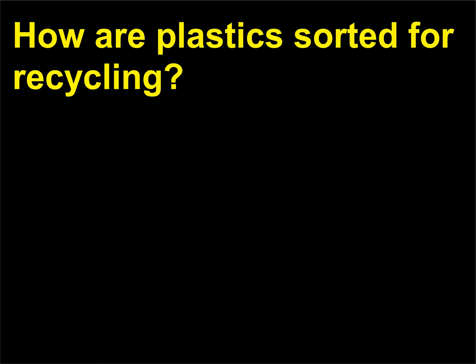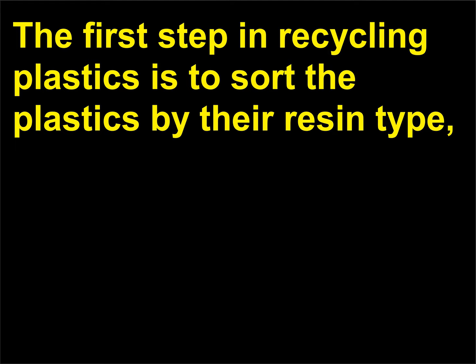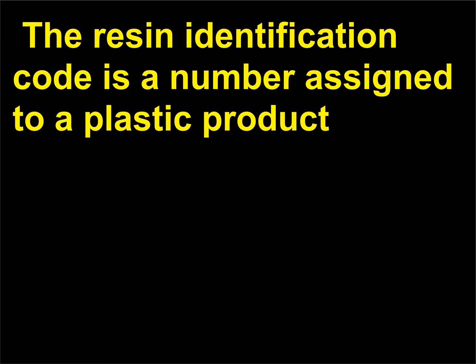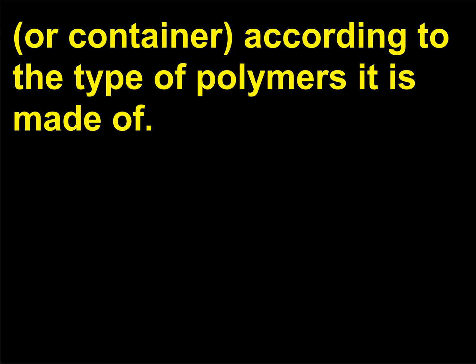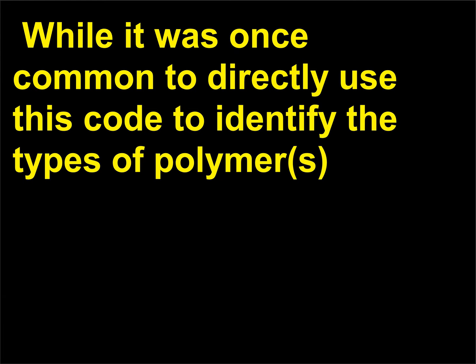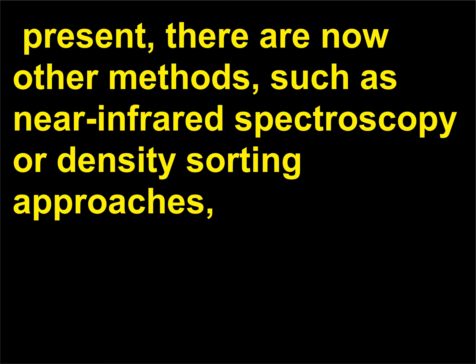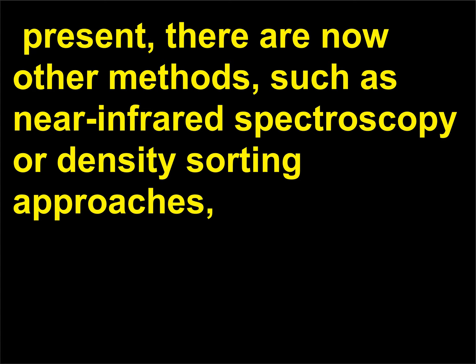How are plastics sorted for recycling? The first step in recycling plastics is to sort the plastics by their resin type, or resin identification code. The resin identification code is a number assigned to a plastic product or container according to the type of polymers it is made of. While it was once common to directly use this code to identify the types of polymers present, there are now other methods — such as near-infrared spectroscopy or density sorting approaches — that are used to sort mass quantities of plastic samples for recycling.